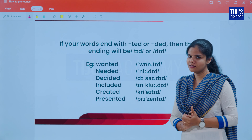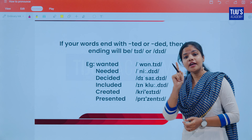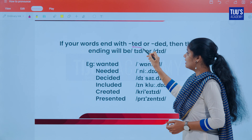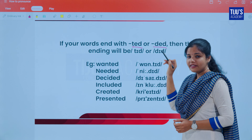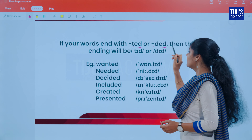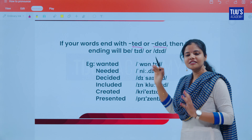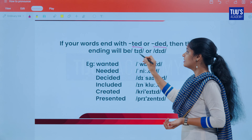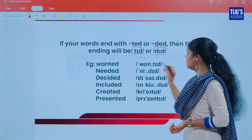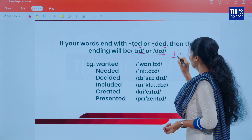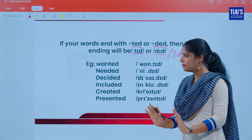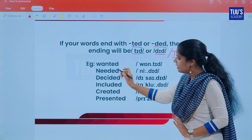Rule one: if the word ends with a 'T' or 'D' sound before the ED ending — that is, words ending in '-ted' or '-ded' — the ending is pronounced as /ɪd/. For example, we are going to look at three words that follow this rule.